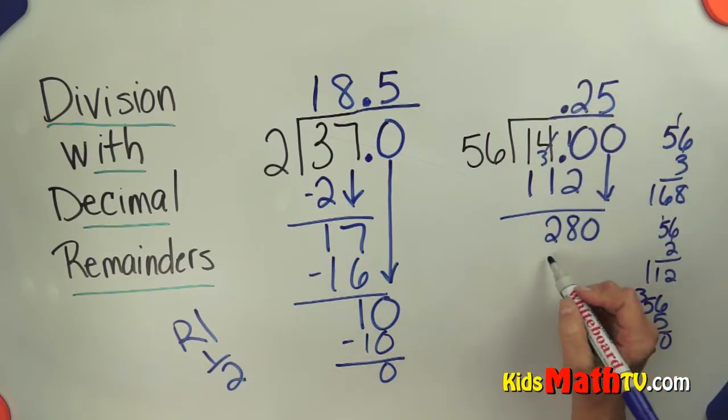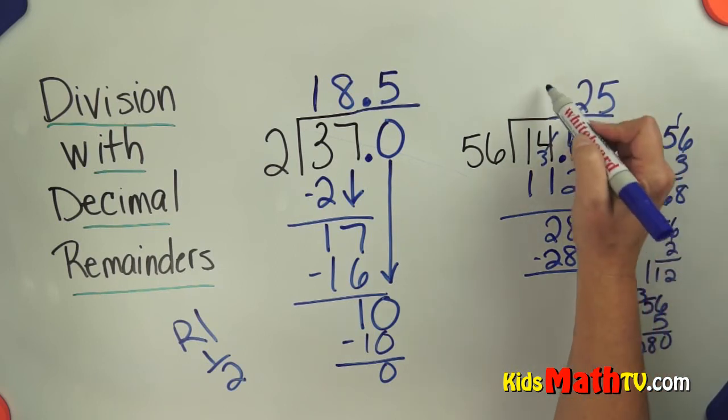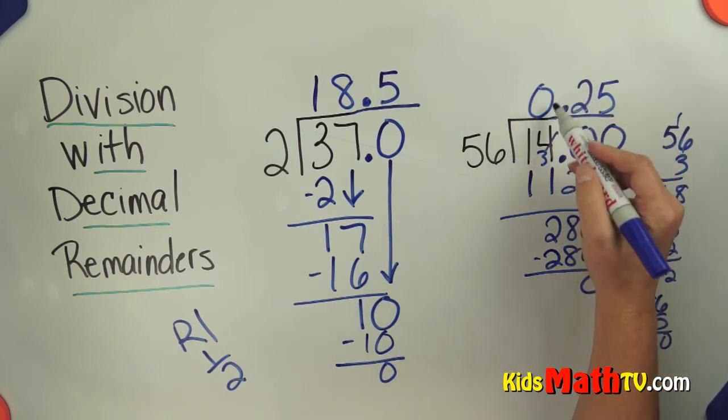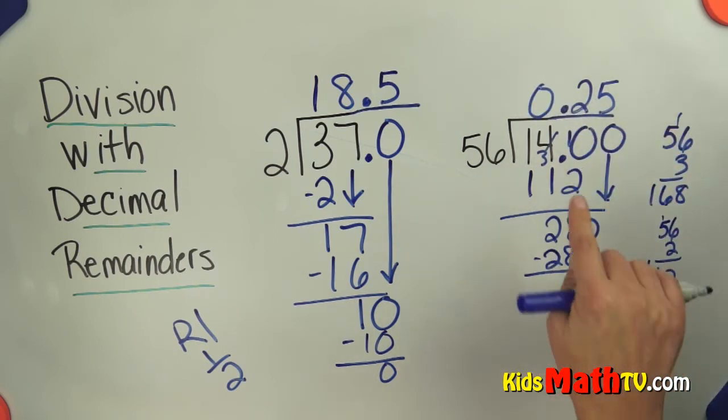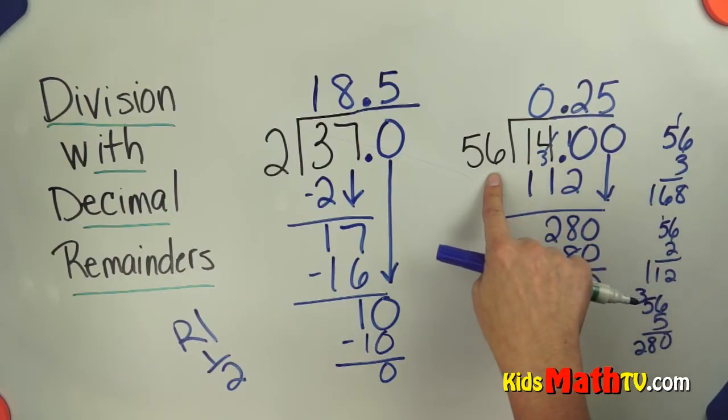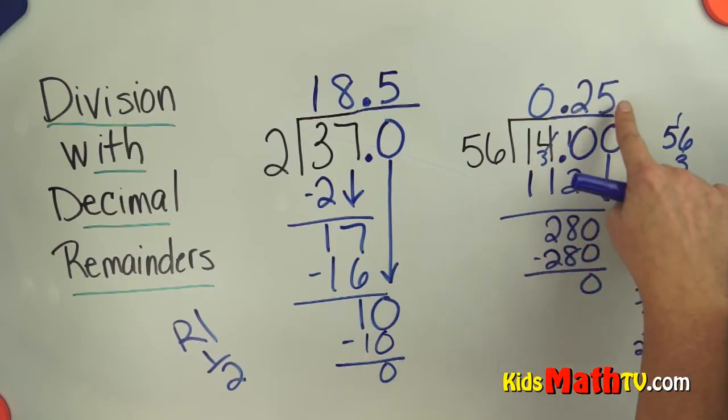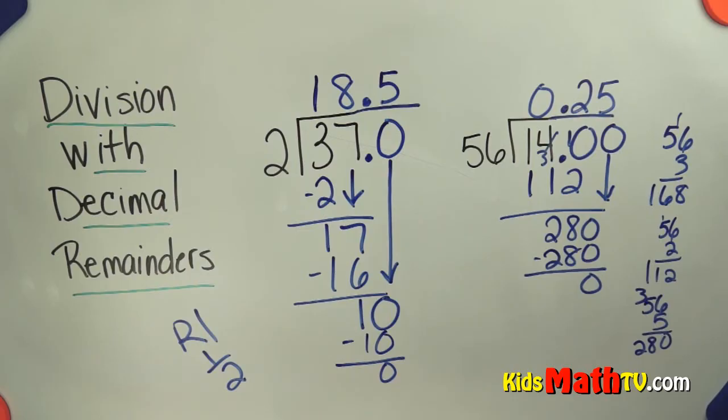5 times 56 is 280. Subtract and we get 0. So our answer, I like to put a placeholder 0 in front of the decimal, 14 divided by 56 is 0.25 or 25 hundredths. And that's the end of our lesson on division with decimal remainders.